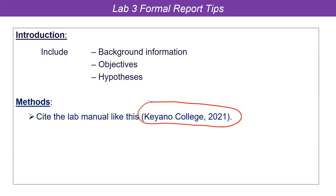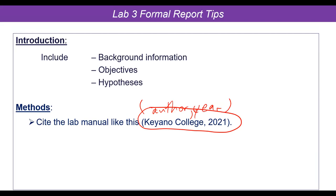A citation looks something like author and year in brackets. Hopefully everyone is with me — Zoom just gave me a little bit of a glitch. I'm not sure what the error message meant. Hoping I am still connected.